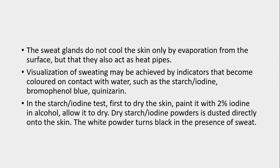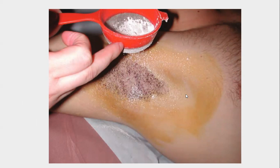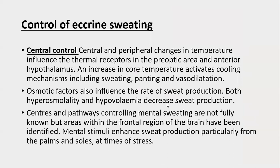The starch iodine test, most commonly used to determine sweating, is done by first drying the skin and painting it with 2% povidone iodine and allowing it to dry. Then normal starch powder or cornflour is applied directly onto the skin. As sweating occurs, the starch powder turns black, and where sweating is maximal the color will be more prominent. On axillary skin, brown or black specks indicate points of maximum sweat secretion.